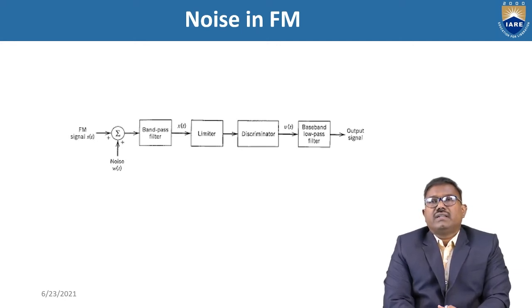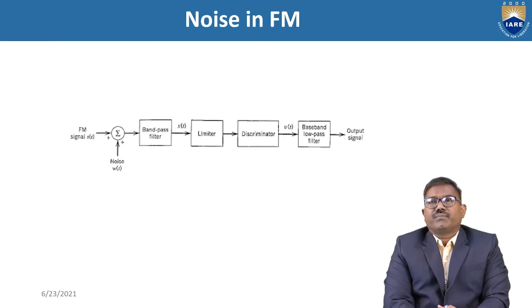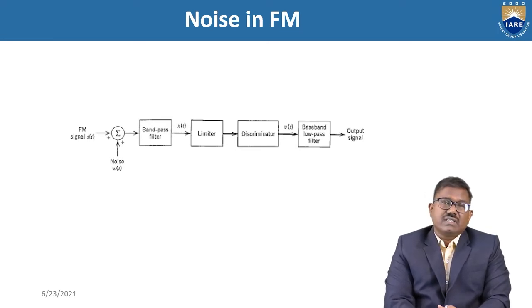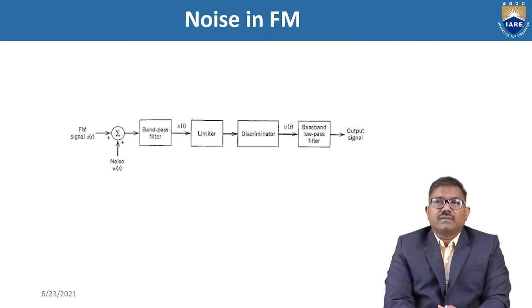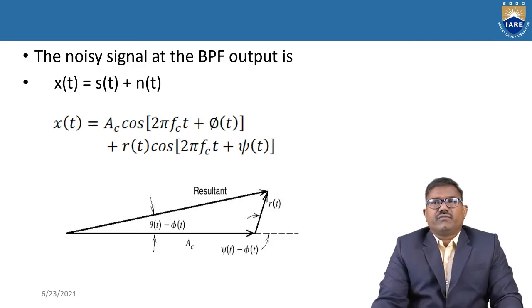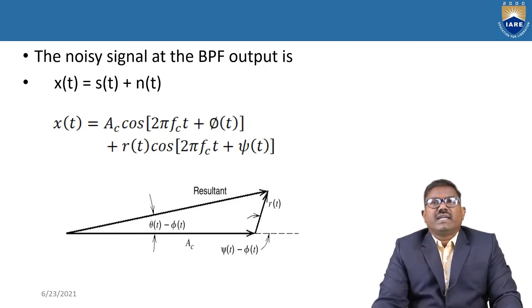Finally we have a low pass filter. The low pass filter allows the signal through because our original message signal is a low frequency baseband signal. So the final output is our message signal. The noise signal at the bandpass filter output is X(t) = S(t) + N(t).